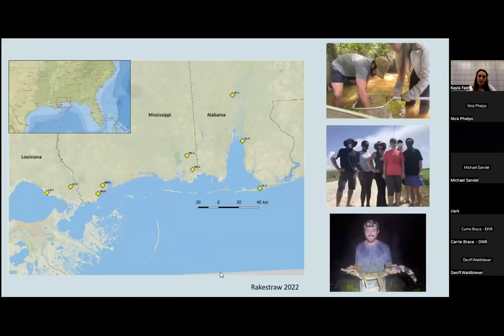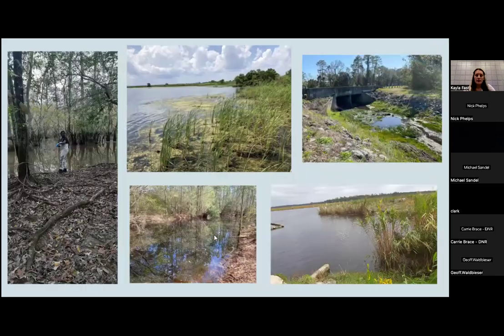So Alex Rakestraw, a previous grad student in our lab, went and collected different sample types around the southeastern United States in Louisiana, Mississippi, and Alabama. These sites included fresh and brackish water environments. The different sample types he collected were soil, water, biofilm, invertebrates, and what we are mainly focusing on, which is the fishes.